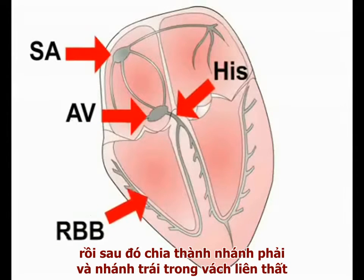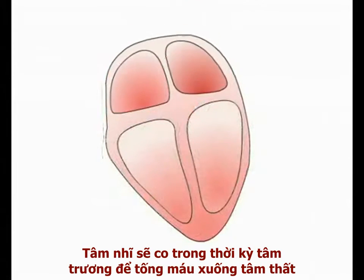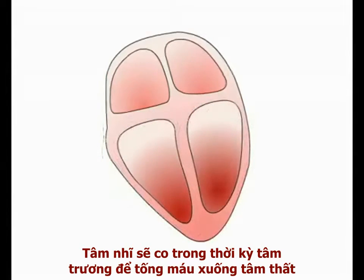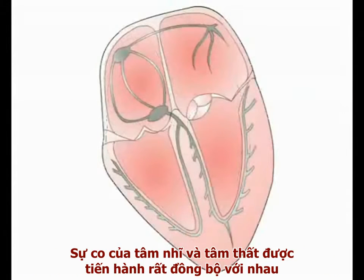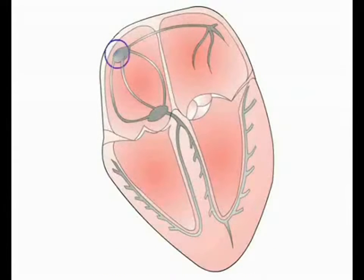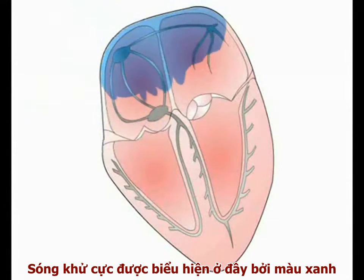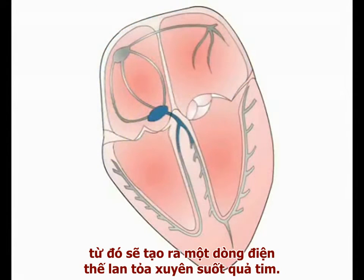The bundle of His then divides into the right and left bundle branches in the interventricular septum. During each cardiac cycle, the atria contract in diastole to fill the ventricles, which then contract during systole to supply blood to the lungs and the systemic circulation. Contraction of the atria and ventricles is tightly coordinated by a wave of depolarisation spreading through the muscular walls of these chambers. The depolarisation wave, seen here in blue, reflects movement of charge across myocyte membranes, and is in effect an electrical current spreading through the heart.